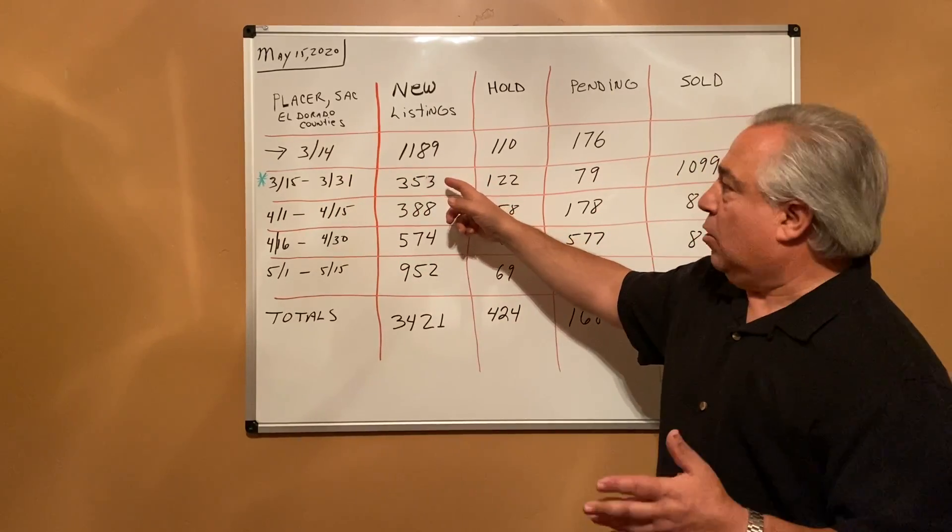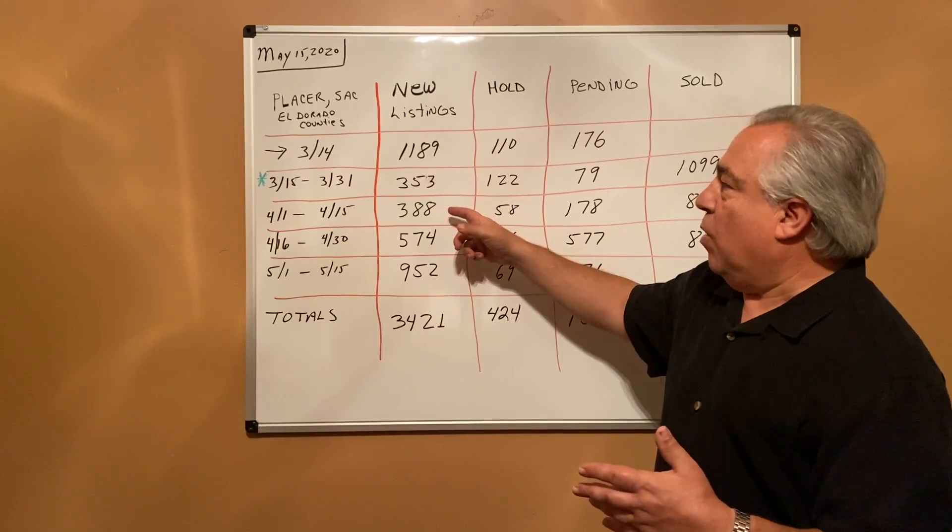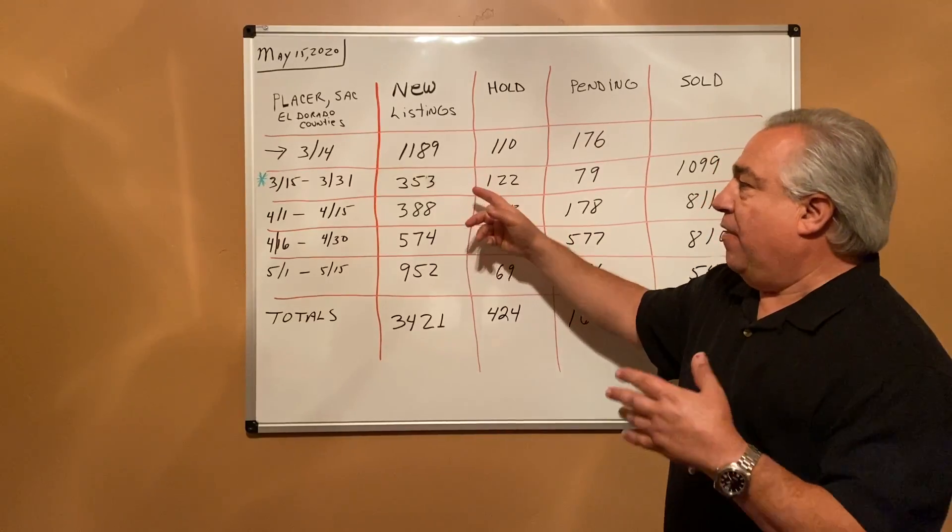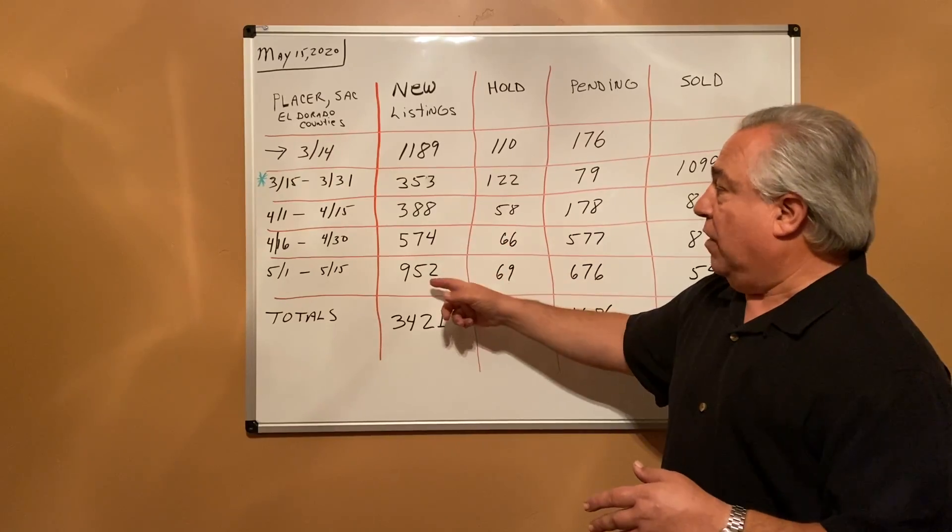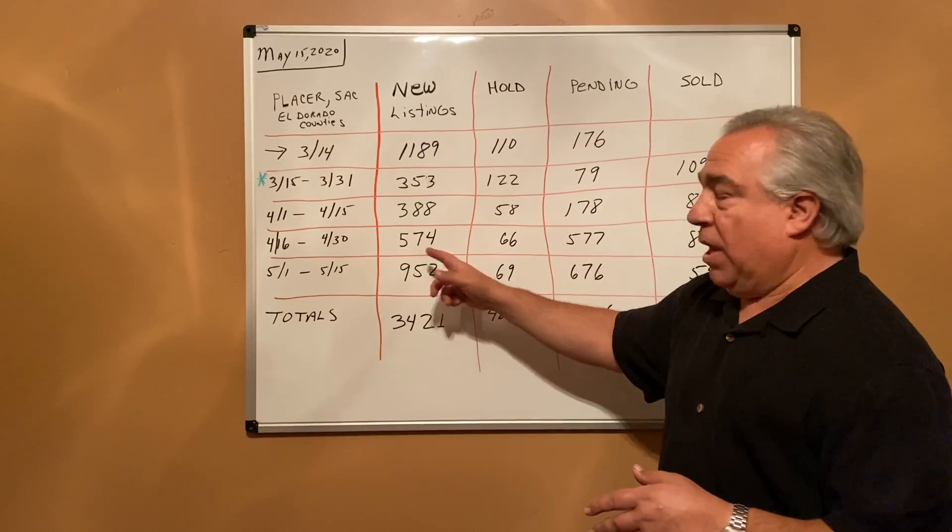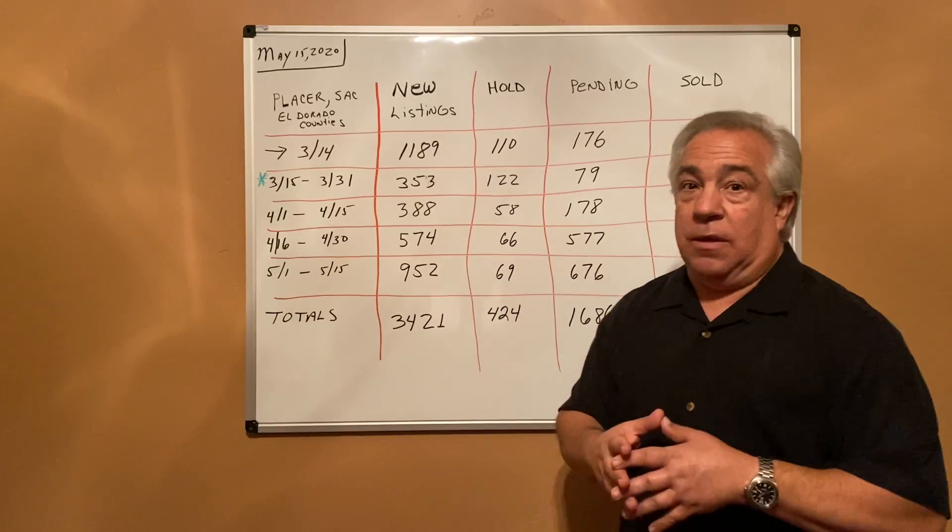Then in April we started to see a pickup—574—and then the first two weeks in May we had 952 new listings come on the market.